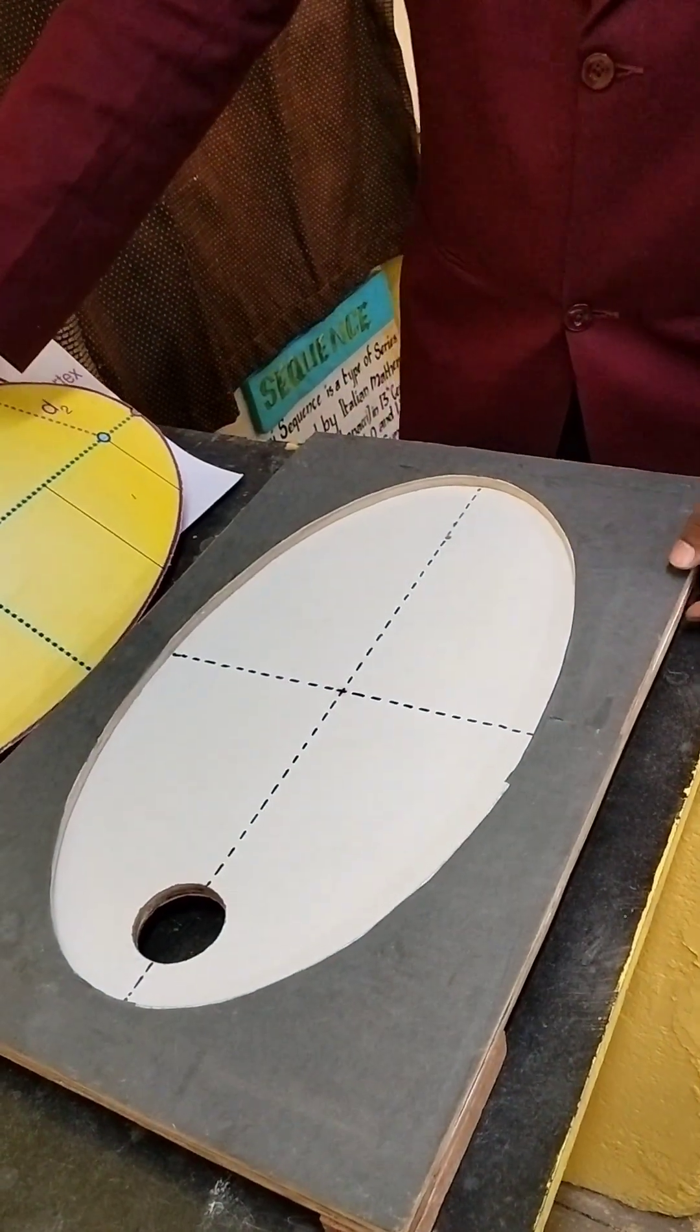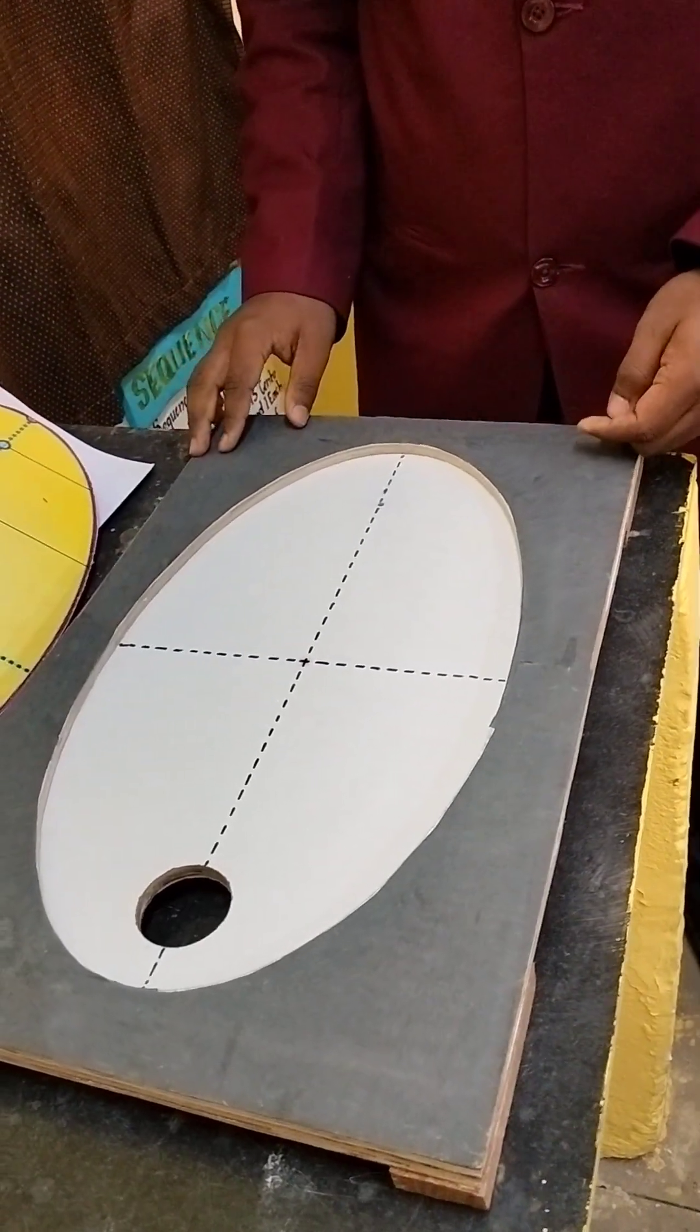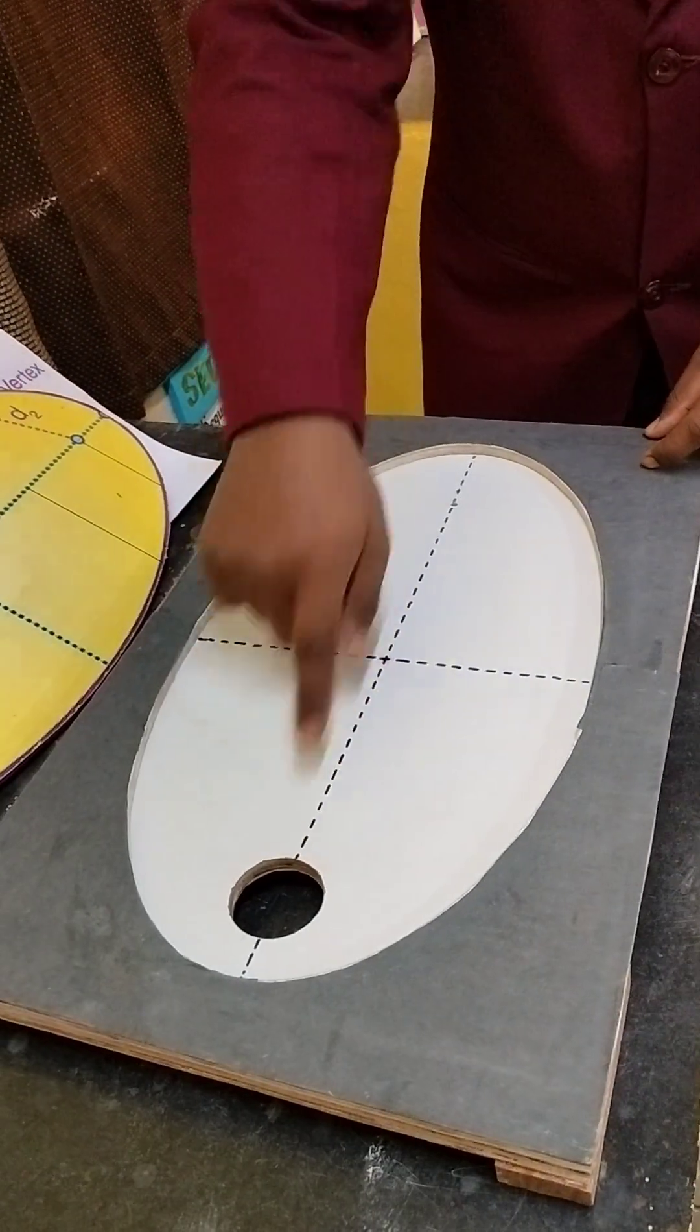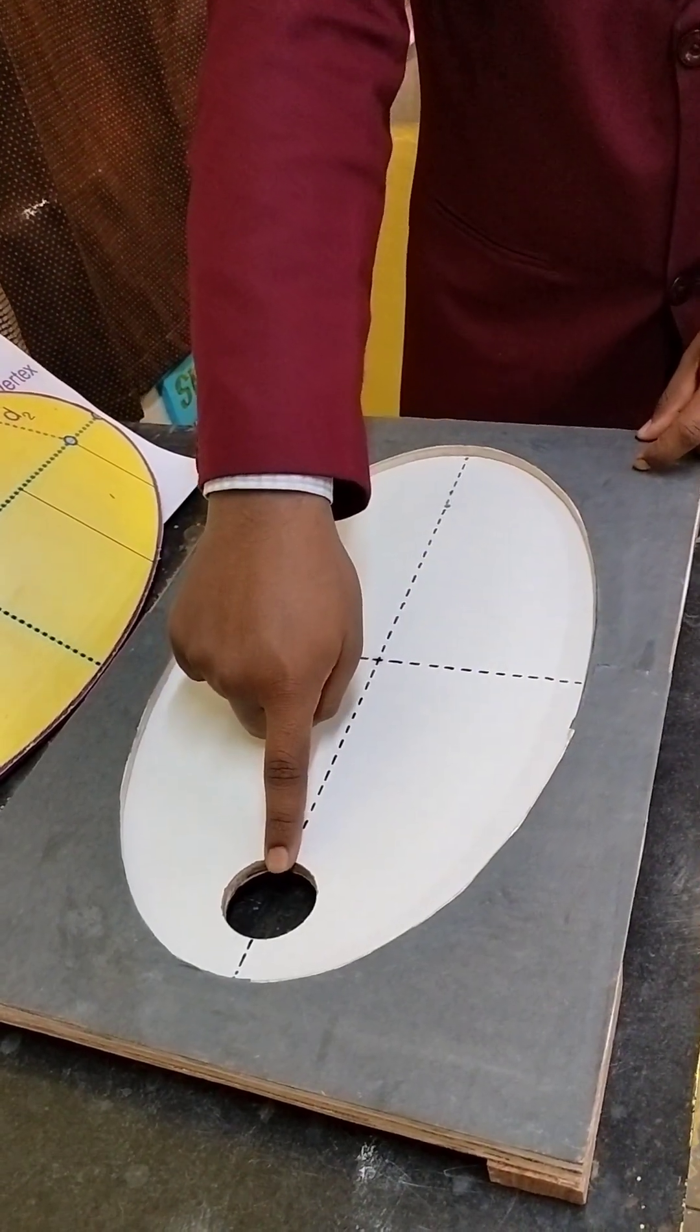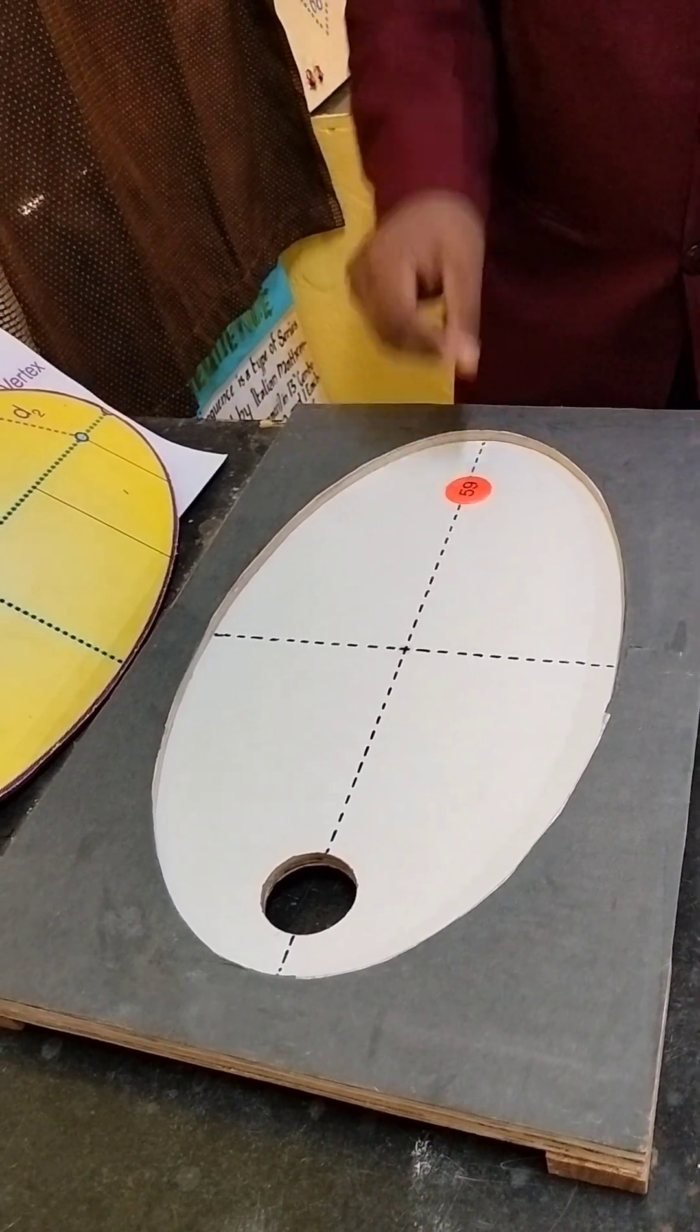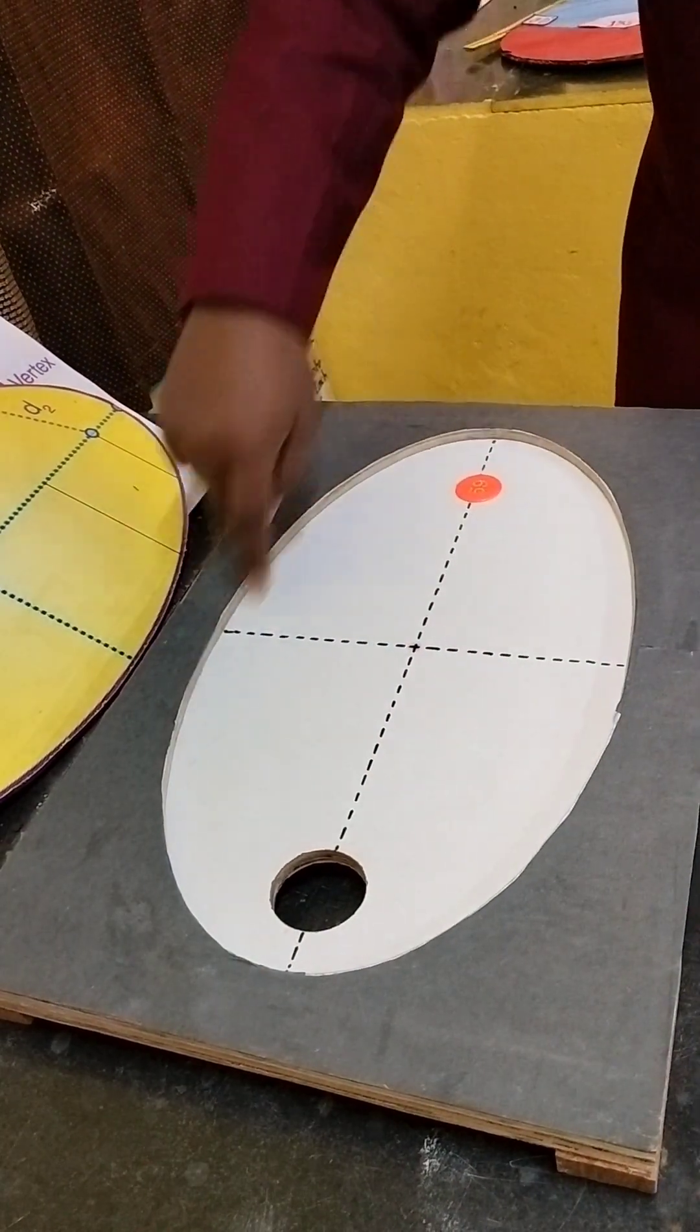Usually we have all played carom in our homes. This is also a type of carom board with the hole at one focus of the ellipse, and at the second focus we will place a striker. When the striker hits any wall of this ellipse, it will always go near the hole or get inside it.